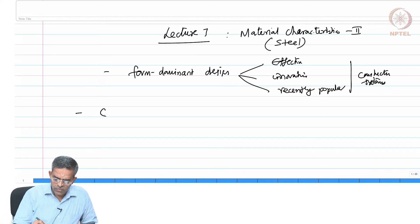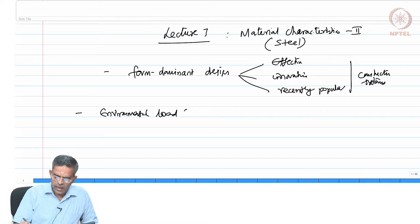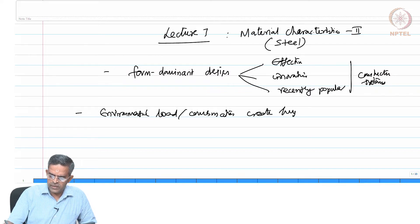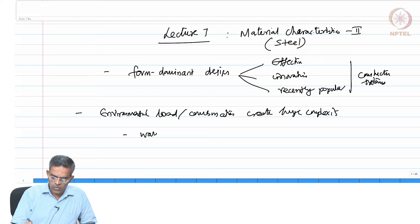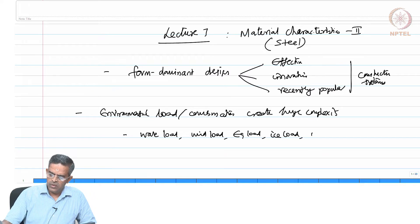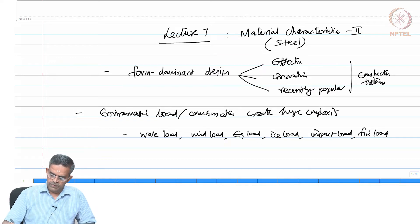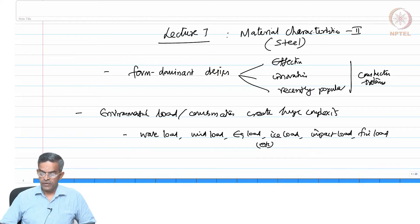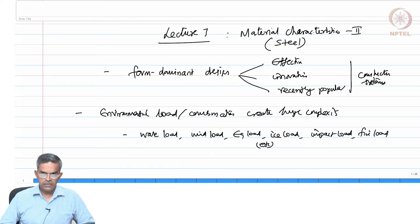Environmental loads and their combinations create huge complexity. For example, wave load, wind load, earthquake load, ice load, impact load, fire load, etc. — these can combine as worst-case rare events to cause huge complexities on structural members.